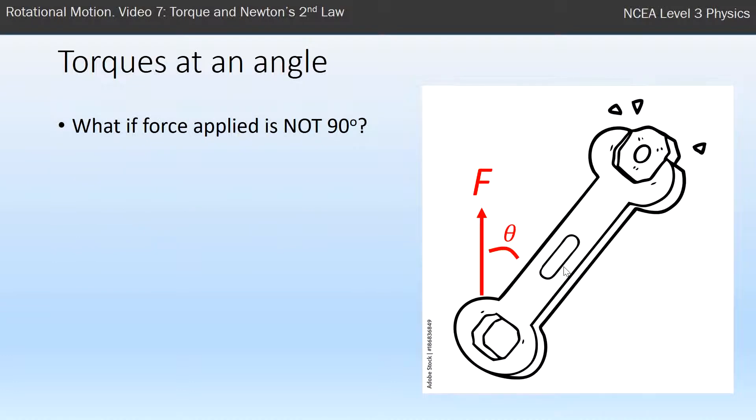What happens if a torque is applied at an angle and that force is not 90 degrees to the centre of rotation? 90 degrees would be perpendicular to the spanner. What then?